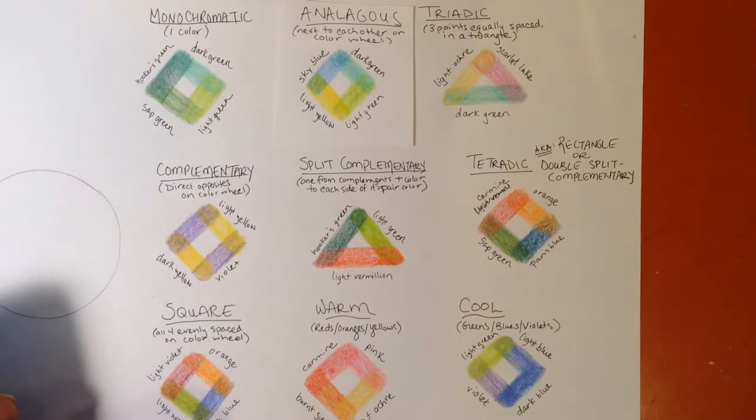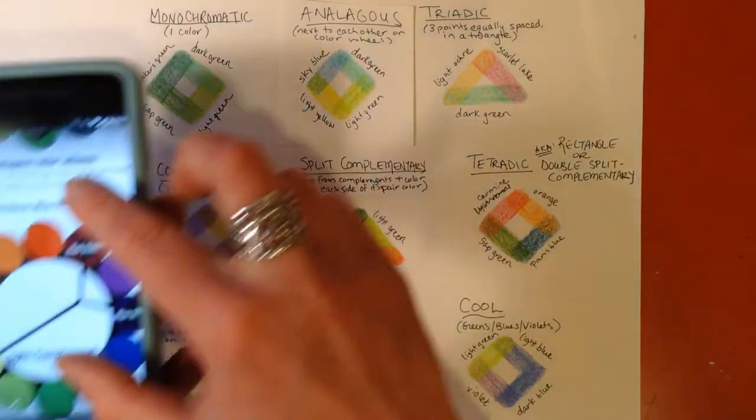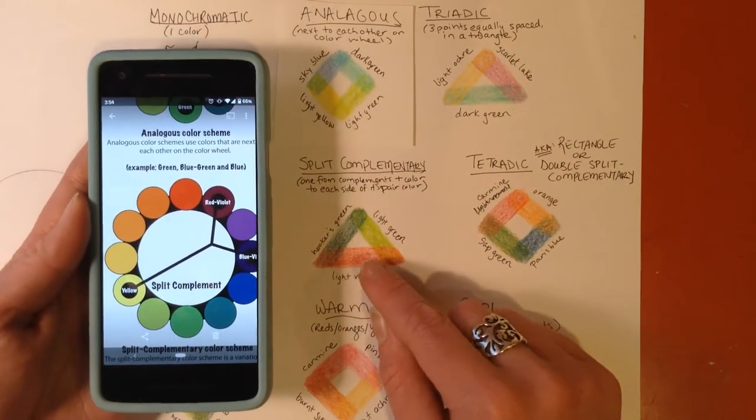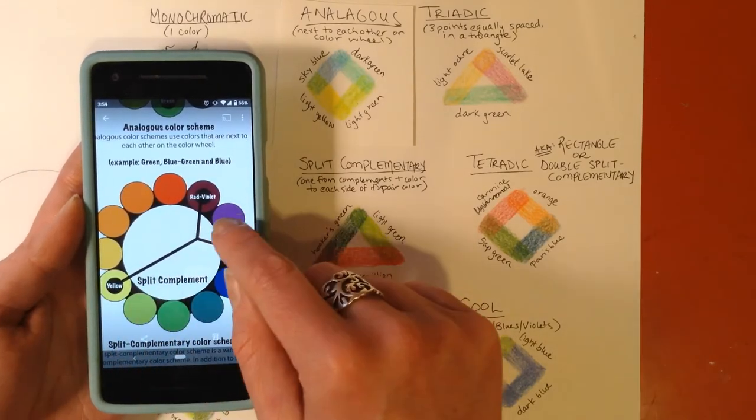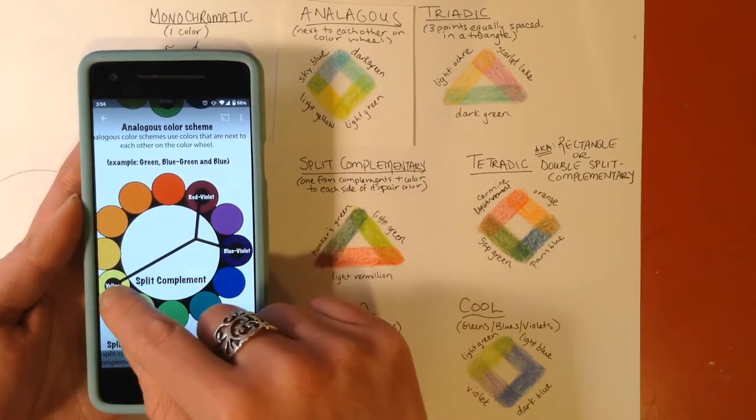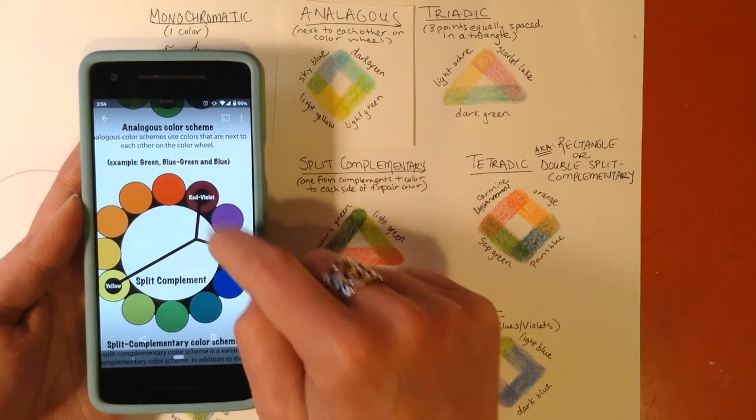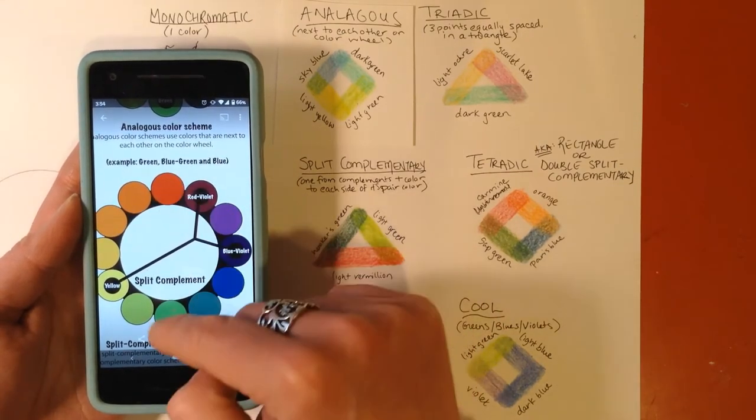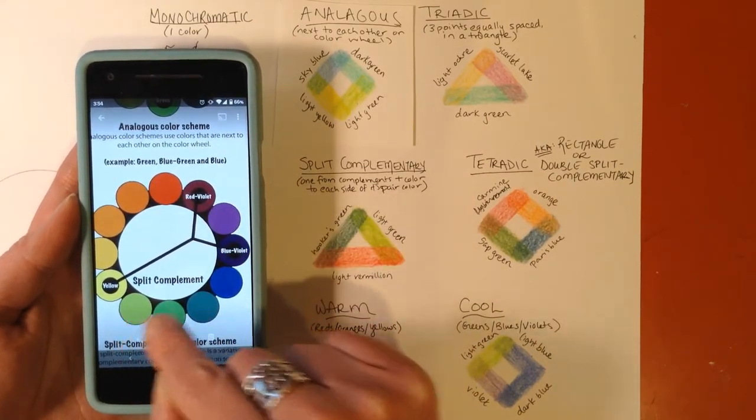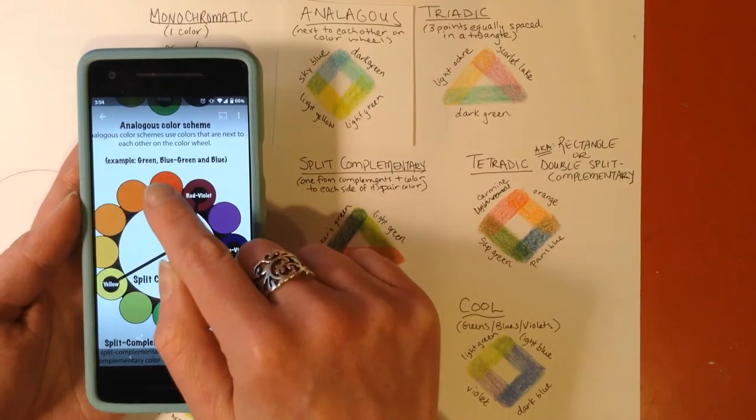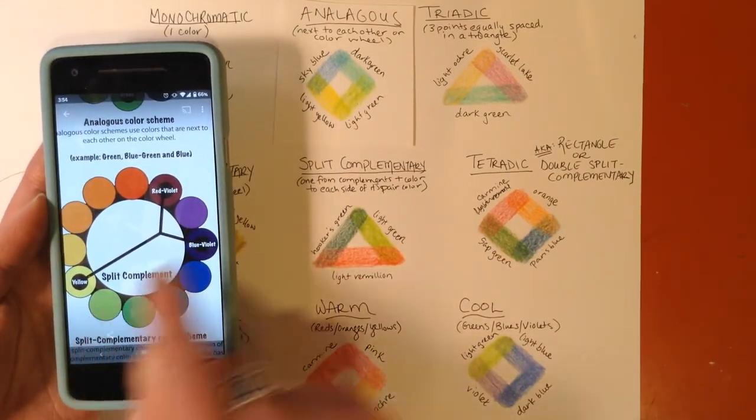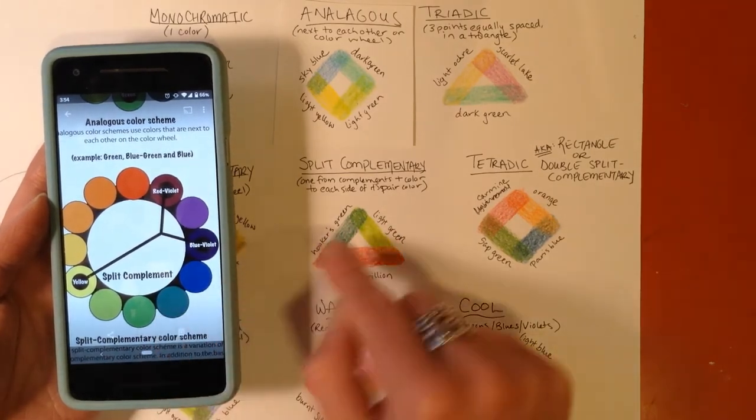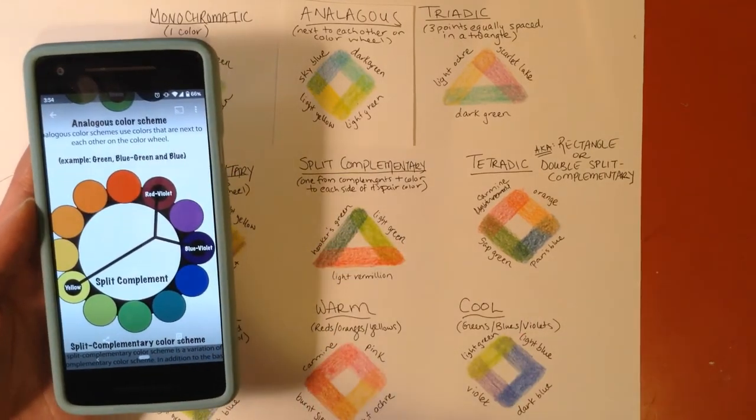Split complementary colors play off of the idea of a regular complementary color, so like yellow and violet. But instead of having yellow and violet, you could do yellow and then the color on either side of the opposite one. So red and green plus the color on either side. So I chose to use light vermilion as my red, and then as my yellow green light green, and as my blue green I went with the hookers green. Could also use dark green for this instance.